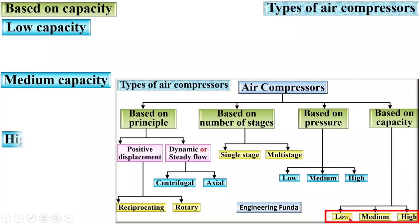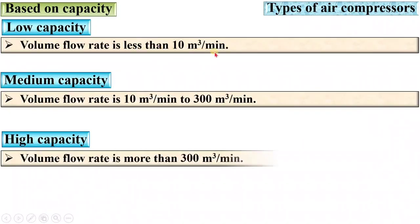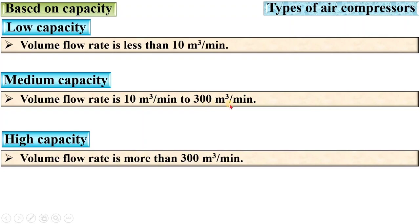Based on capacity: low capacity compressor has a volume flow rate of less than 10 m³/min; medium capacity is 10 m³/min to 300 m³/min; and high capacity has a volume flow rate of more than 300 m³/min. Remember these two figures: 10 and 300.